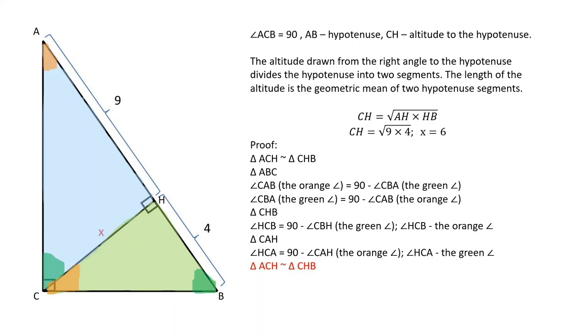The shaded triangles are similar because two pairs of corresponding angles are equal. Therefore, the corresponding sides are proportional. CH over AH is equal to HB over CH.